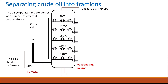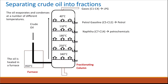At the very top of the fractionating column, the gases are removed — these are fractions with one to four carbon atoms, known as LPG or liquefied petroleum gases, used at home. At around 40°C, petrol or gasoline is collected, with carbon chains of five to twelve atoms. At 110°C, naphtha is collected, with carbon chains of seven to fourteen atoms, and this is purified for use in petrochemicals.